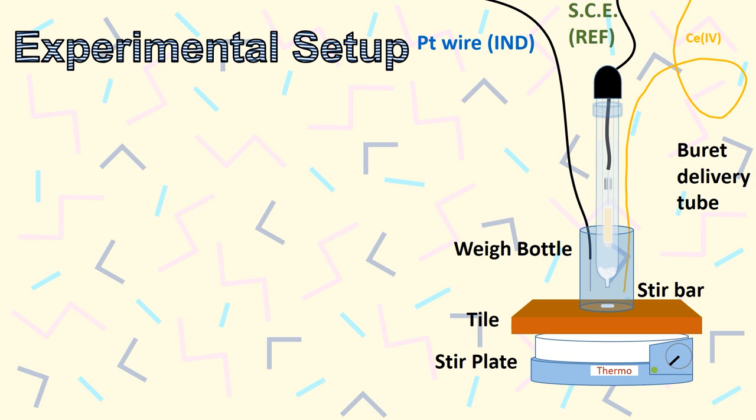After each analysis, you'll want to wipe off any excess solution on the SCE. To do this, gently dab the bottom of the electrode with a Kim wipe rather than roughly scrubbing it.